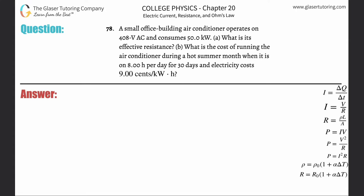Number 78: A small office building air conditioner operates on 408 volts AC and consumes 50 kilowatts. What is its effective resistance? Alright, so we've got voltage, we've got power, and we need to find resistance. What's the formula? Well, simply power is going to be equal to voltage squared over resistance. Solve this for resistance, so just do your cross multiplication.